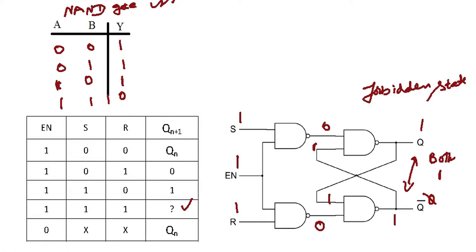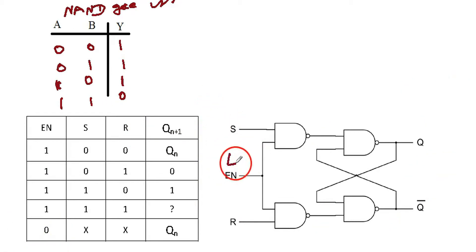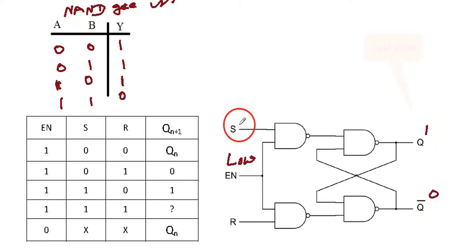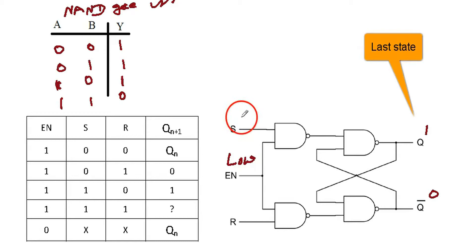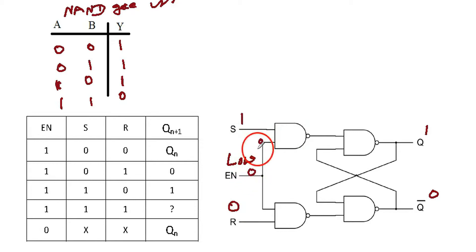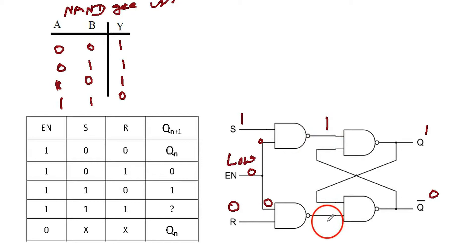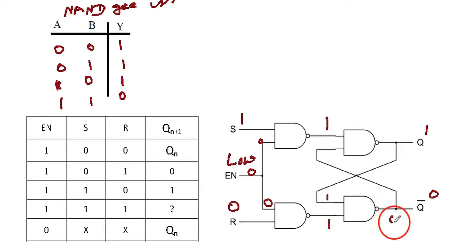Now if the clock is low, with previous state 1,0 and whatever the value of S and R — that is immaterial. The previous state will exist as it is. If the clock is low, there will be no problem. Whatever S and R are, and whatever the previous state was, it will be retained.